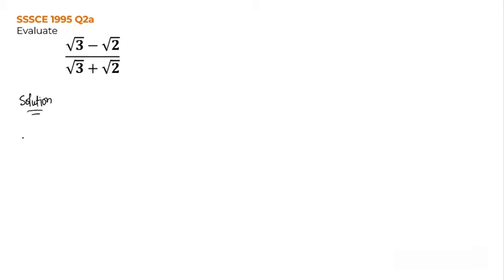So we have root 3 minus root 2 over root 3 plus root 2. Now, to solve this expression, what we need to do is to get rid of the root signs.